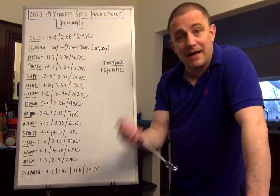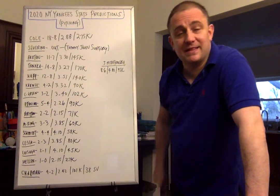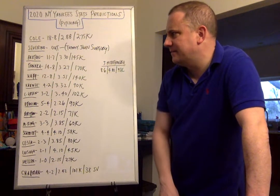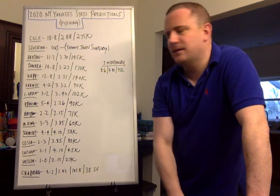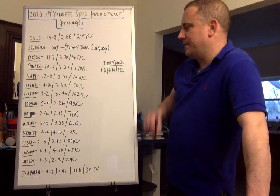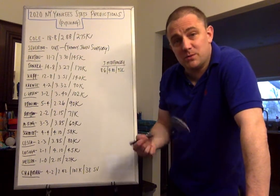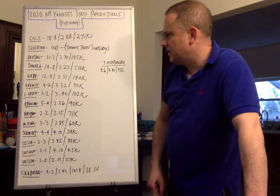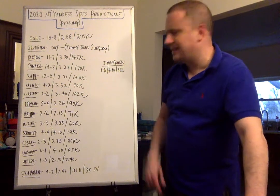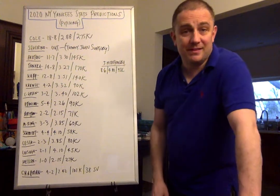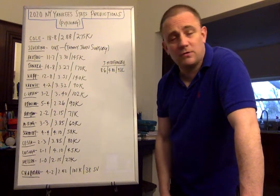James Paxton, I see him coming back as well. He'll probably miss the first month after getting that cyst removed from his back. But I still see him going 11-7 with a 3.30 ERA and 145 strikeouts. Let's go over to Jordan Montgomery. Also coming back from Tommy John as well. He'll get a lot of opportunities too. I see him going about 8-6 with about a 4.0 ERA and about 95 strikeouts. Another Andy Pettitte type lefty pitcher, which I think will come in handy.